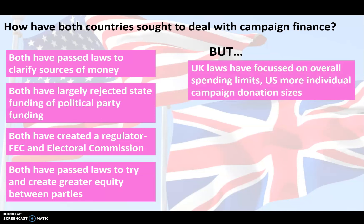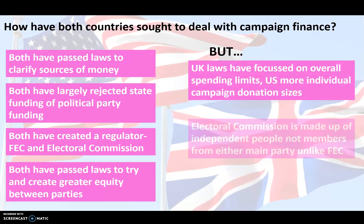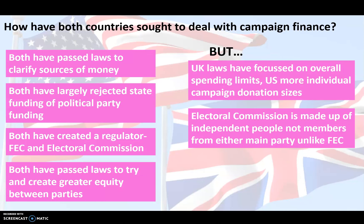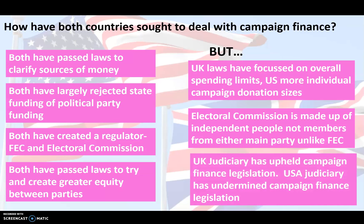In terms of differences: the UK has focused on overall spending, the USA on donation sizes. The Electoral Commission is arguably stronger than the FEC. The UK judiciary has actually upheld campaign finance legislation — the Conservative Party were forced to pay a fine for overspending in the 2015 or 2017 election, and Vote Leave was also prosecuted. Whereas in the United States, the judiciary has actually undermined campaign finance — Citizens United, for example, along with various other actions the courts have taken.